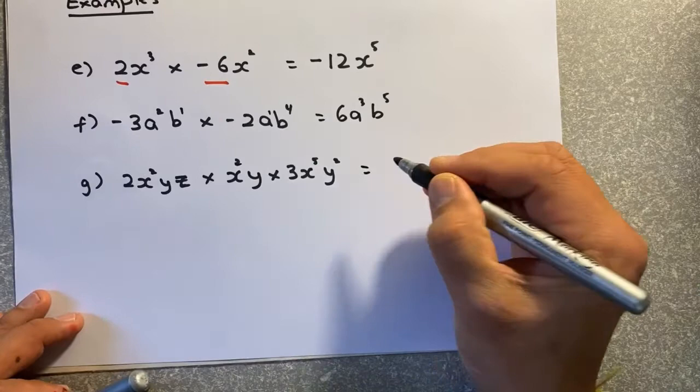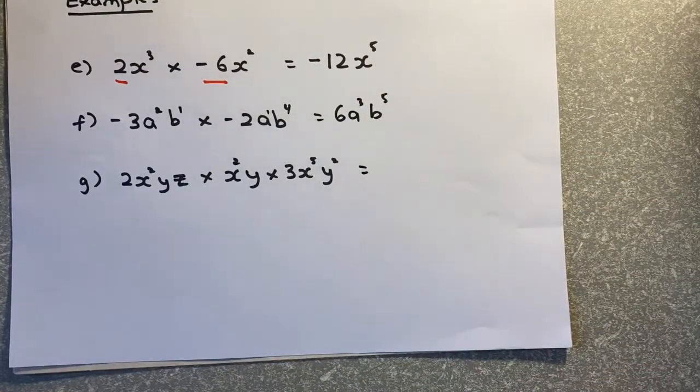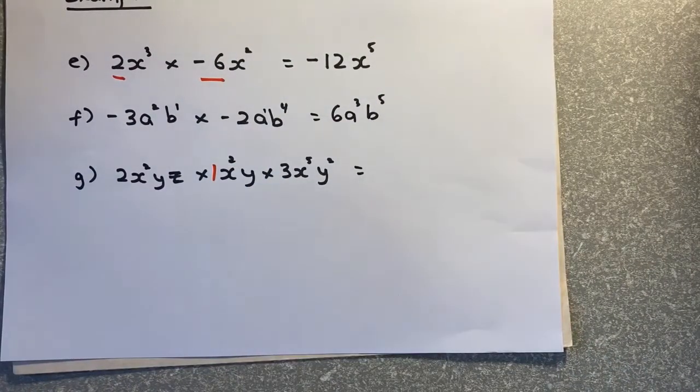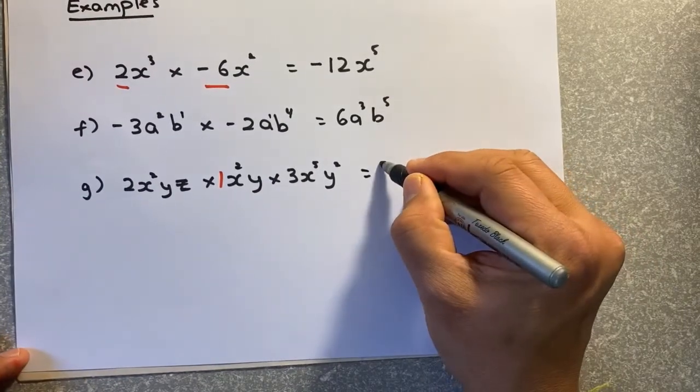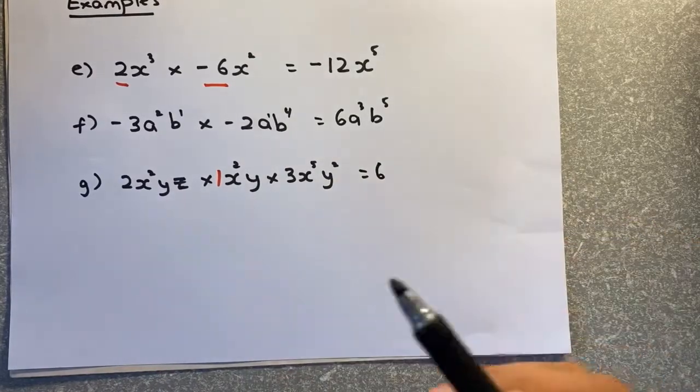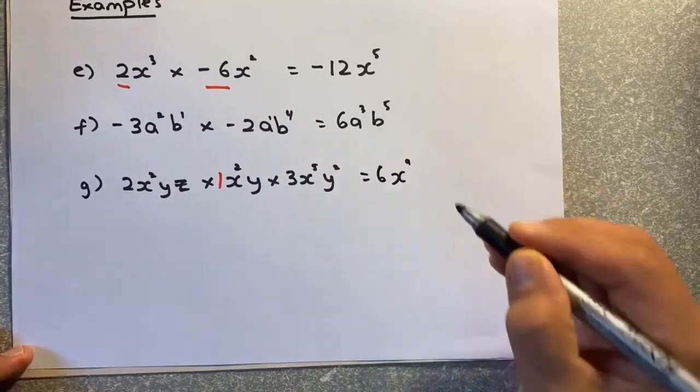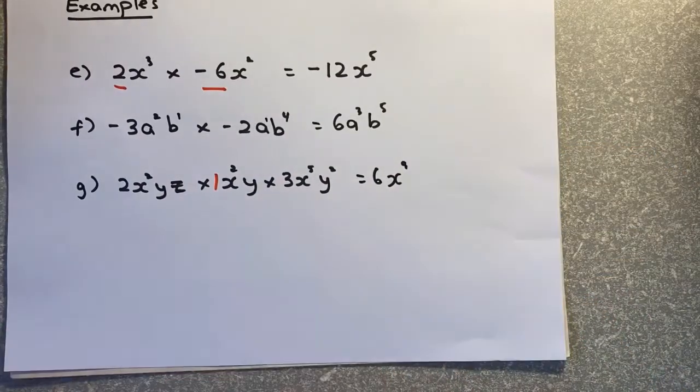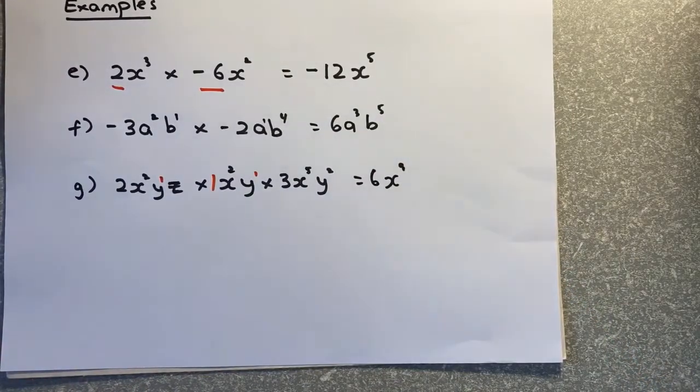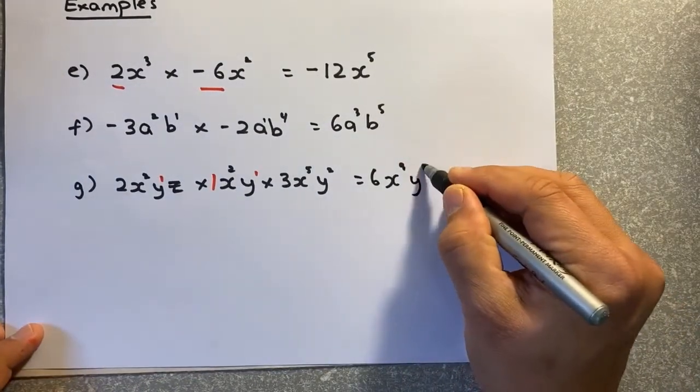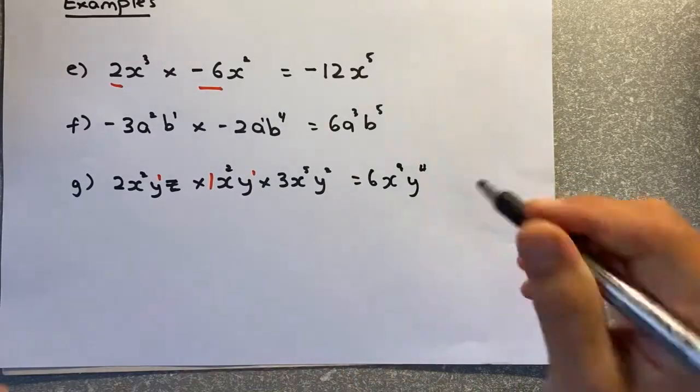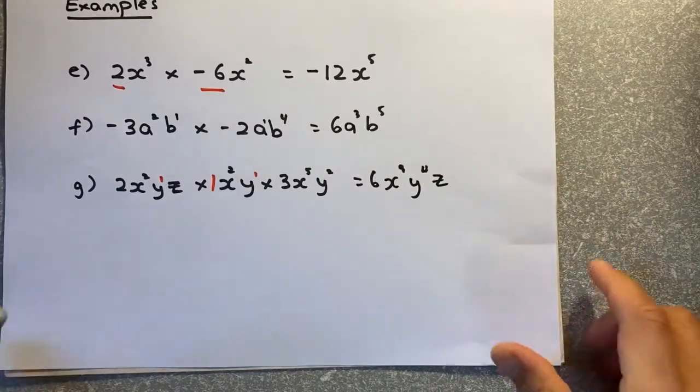Now we shall do 3 numbers. It's going to be the same. So if there's no numbers here, you put a 1. You multiply numbers with numbers. 2 times 1 times 3, that will give you 6. And then x squared, x squared, x5. Add them up. 2 plus 2 plus 5 will give you x9. Then the y. There's no numbers in front, so it's 1, 1 and 2. So you add 1 plus 1 plus 2, it's y4. And there's a z there, so we put a z at the end of the equation.